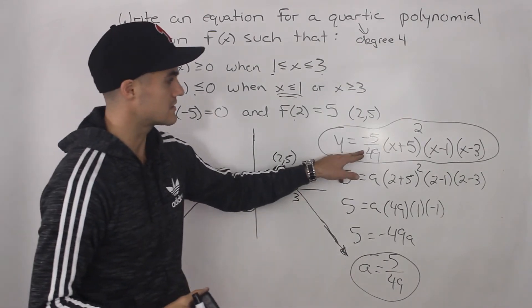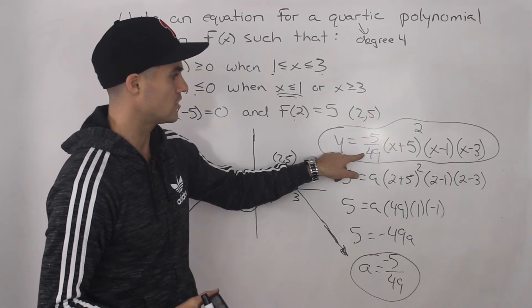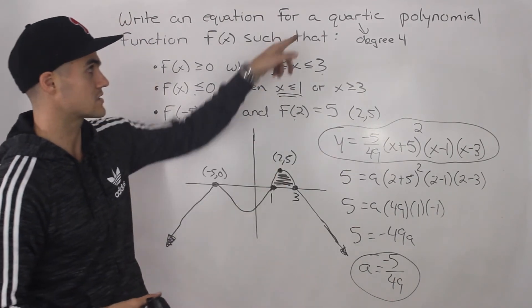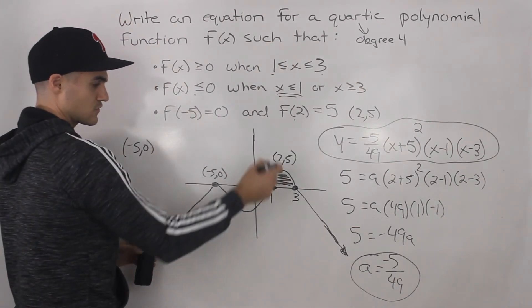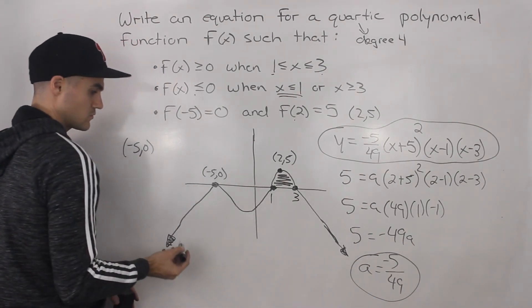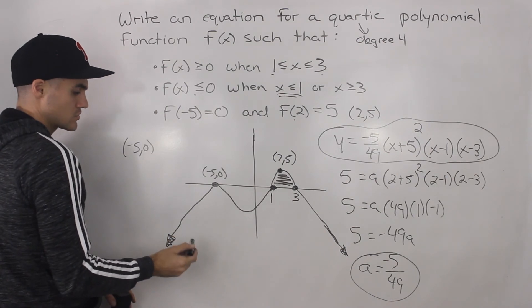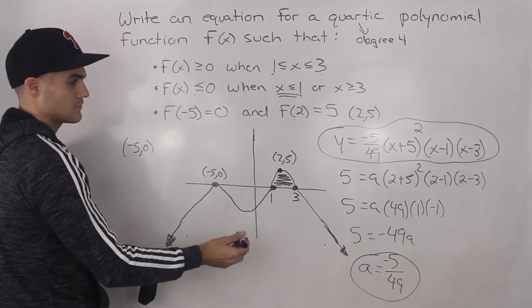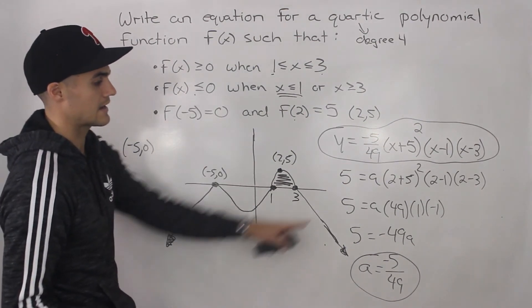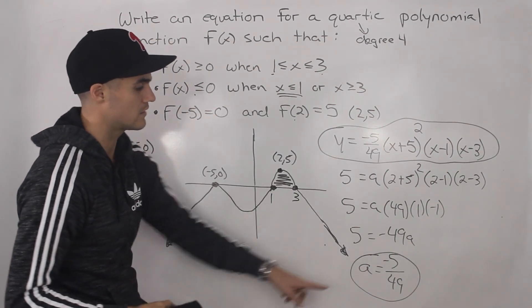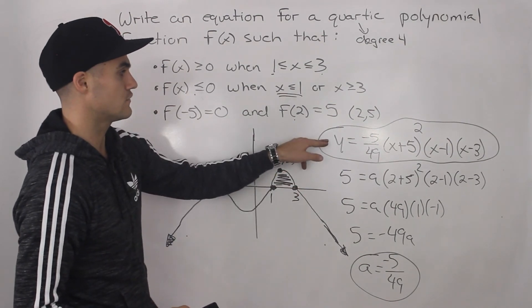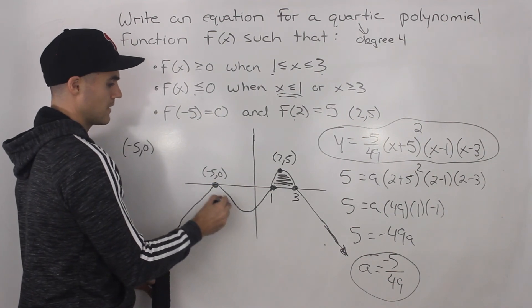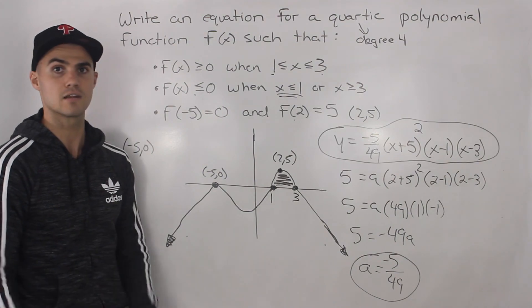It makes sense that a is negative, because negative five over 49 gives a negative leading coefficient for this quartic polynomial. The end behaviors we determined when drawing the graph go from quadrant three to quadrant four, which corresponds to a quartic polynomial with a negative leading coefficient. So the final answer is y equals negative five over 49 times (x plus 5) squared times (x minus 1) times (x minus 3). The trickiest part was knowing we had to bounce the graph off the x-intercept at negative five.